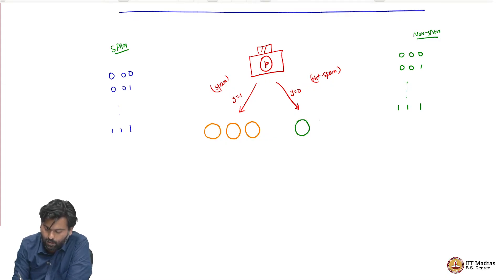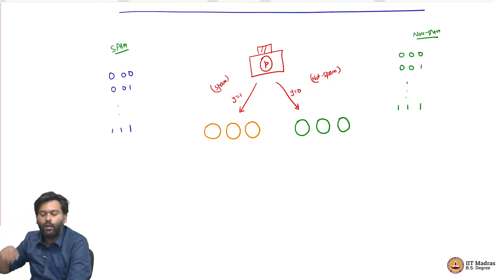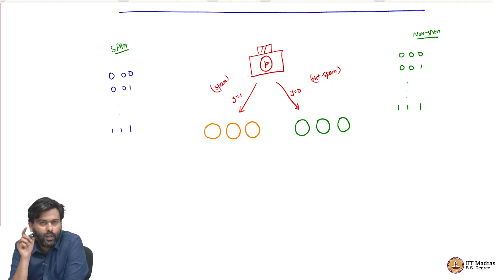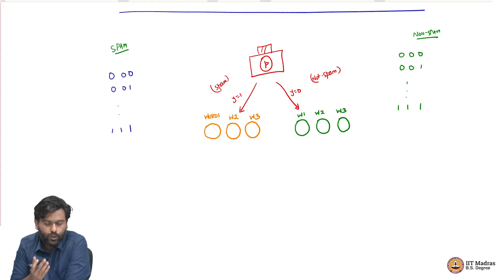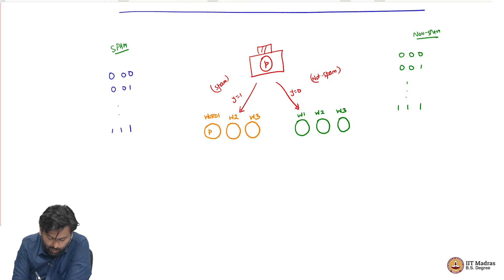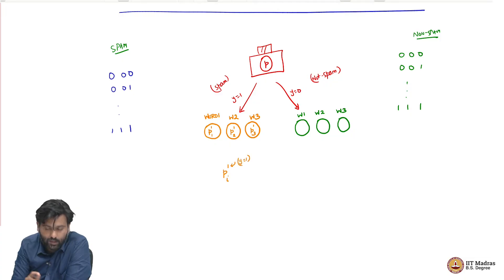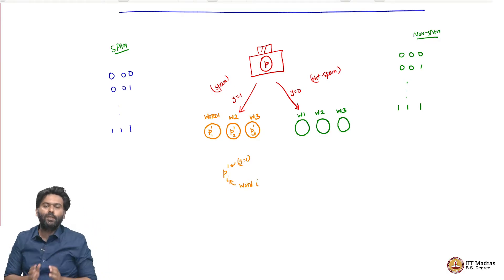I have 3 coins here as well. What are these coins? Well, if there are d features which means d words, each of these coins is going to correspond to a word. This is word 1 coin, this is word 2, this is word 3. Similarly on the other side, this is word 1, word 2, word 3. Each coin — let us look at the spam side, the orange coins — has some probability associated with it, which I am going to mark as p11, p12, p13. p1i means this 1 says y equals 1, that is we are in the spam world, and i says which word.